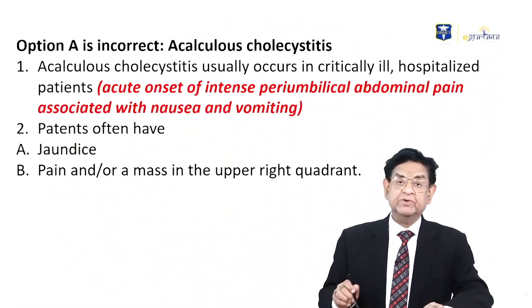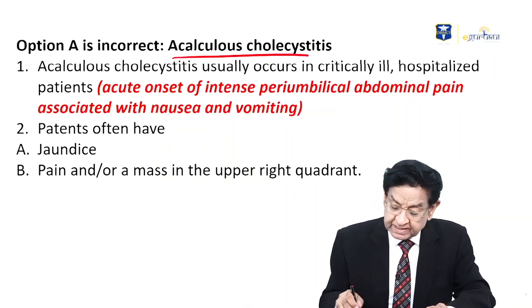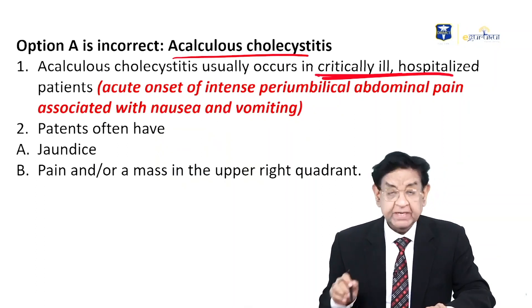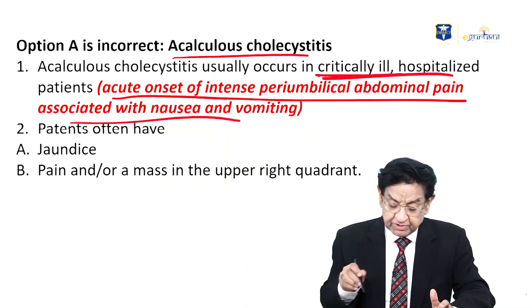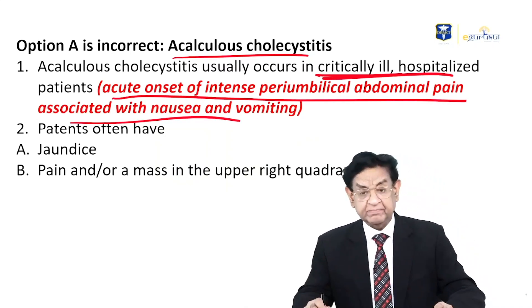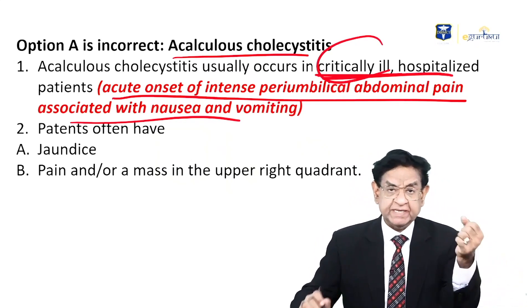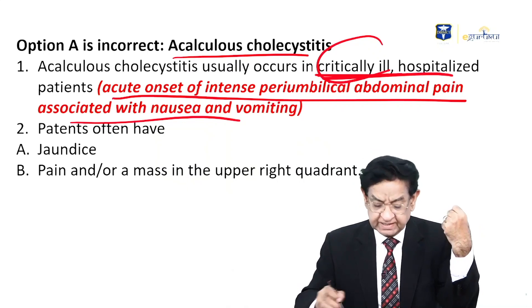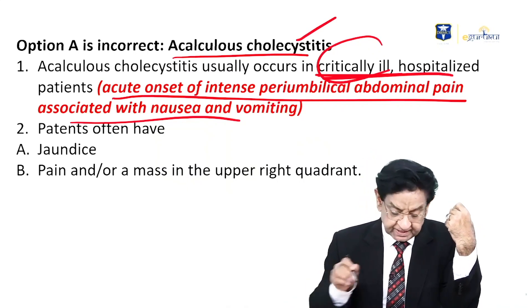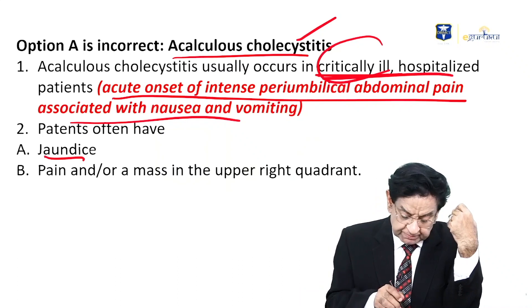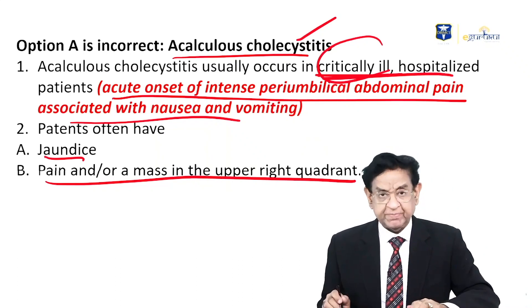Considering other differential diagnoses: acalculous cholecystitis occurs in critically ill, already hospitalized patients. Patients typically have jaundice, pain, and a mass in the right upper quadrant, which is not present in our patient. Our patient had acute onset associated with nausea and vomiting, not the subacute picture of acalculous cholecystitis.